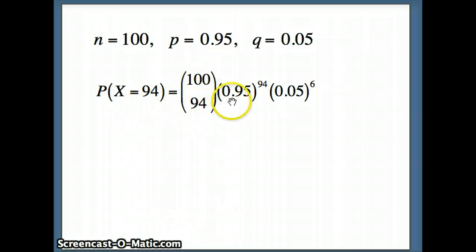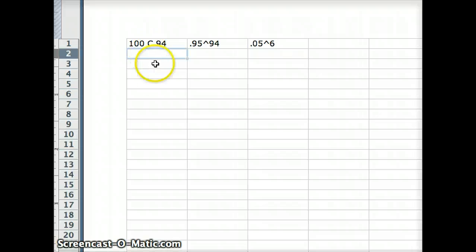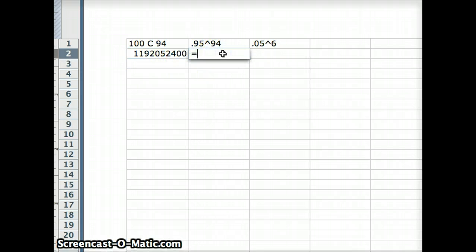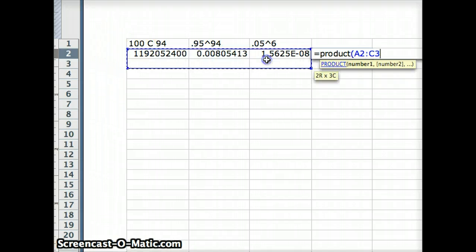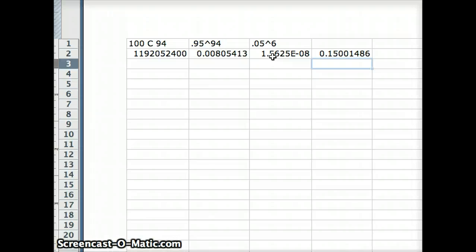So to do this, we're going to need to use our binomial probability. And the probability that x equals 94 is going to be 100 choose 94, times 0.95 to the 94, times 0.05 to the sixth. So let's do this on Excel. 100 choose 94 equals... 0.95 to the 94 equals... 0.05 to the sixth equals... And to get that probability we've got to multiply them together. We're going to say equals product and multiply those three numbers together. And what do we get? We get 0.1500.